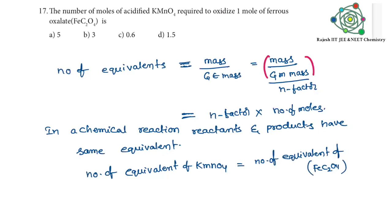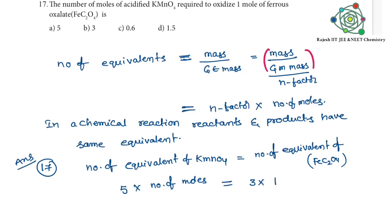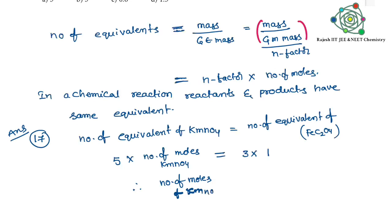Here n-factor for KMnO4 in acidic medium is 5, and n-factor for FeC2O4 is 3. So here already given FeC2O4 number of moles is equal to 1, n-factor 3. How to calculate n-factor for this we will discuss at the end of this video.